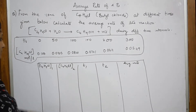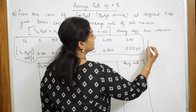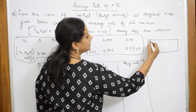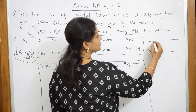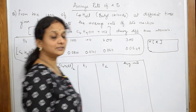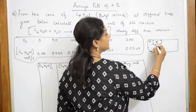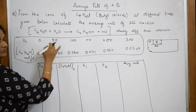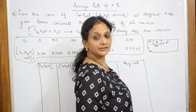Now, for calculating the average rate of this particular reaction, we have a formula. The formula is: delta concentration of the reactant — that is your C₄H₉Cl, butyl chloride — divided by delta T, that is the change in time. For example: 50 minus 0, 100 minus 0, change in time, multiplied by 10 raised to 4.